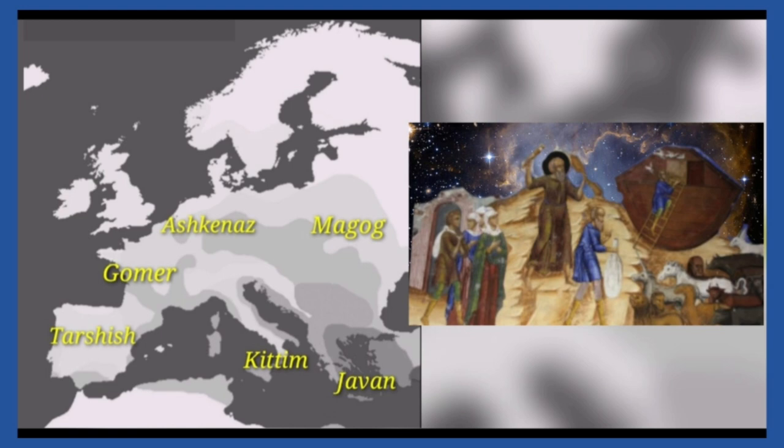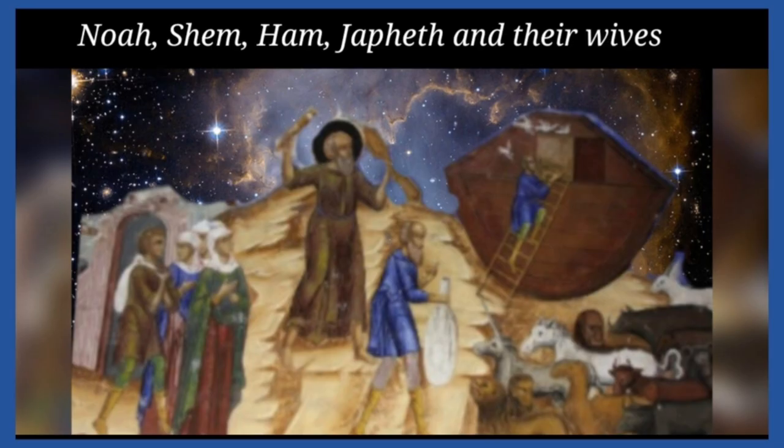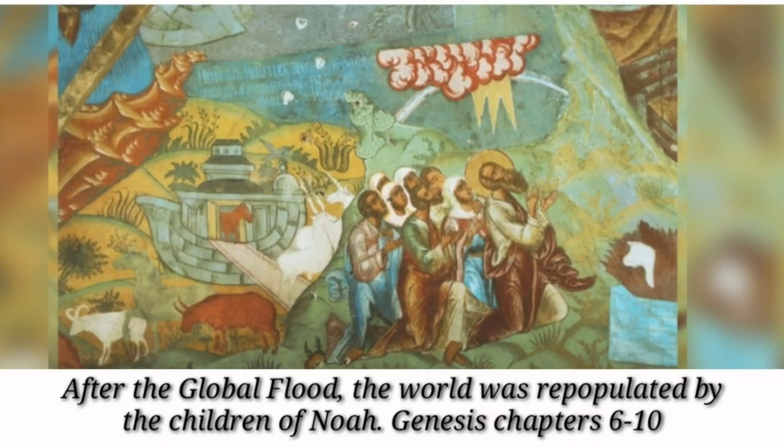The ancient nations of Europe were the survivors of the great Biblical flood. They were descended from the children of Noah's son Japheth. Noah, Shem, Ham, Japheth, and their wives survived the global Biblical flood. After the global flood, the world was repopulated by the children of Noah. You can read about this in Genesis, chapter 6 through 10.